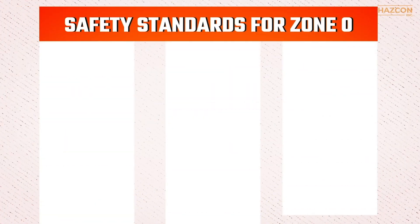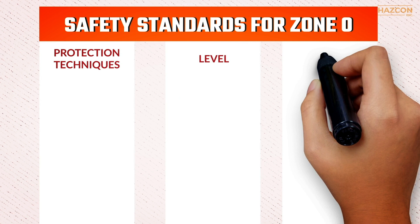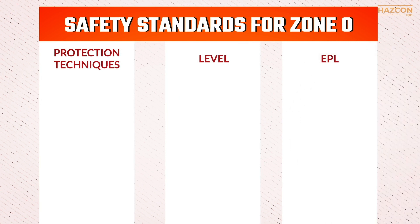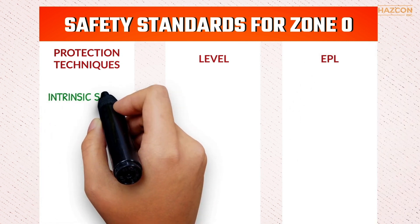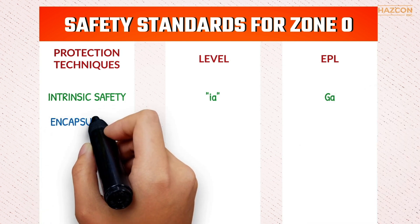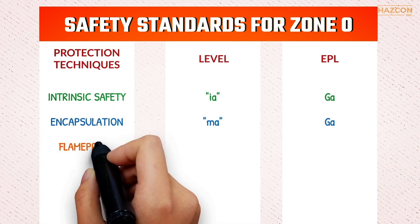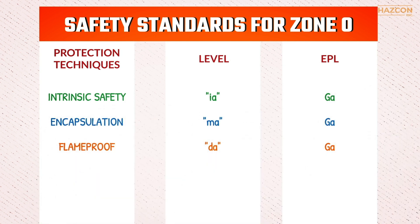The product used in this area must be safe. In order to be certified as compliant with safety standards for Zone 0, the product must be protected by one or more of the following protection techniques: intrinsic safety with level of protection ia, encapsulation with ma protection, and flame proof with da protection.